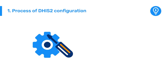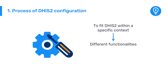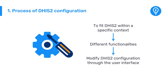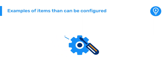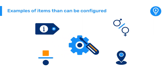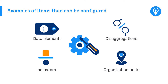Let's start by discussing the process of DHIS2 configuration. In order to localize DHIS2 to fit within a specific context, DHIS2 has several different functionalities that allow you to modify the configuration directly through the user interface. Examples of items that can be configured this way include data elements and their disaggregations, indicators, and organization units.